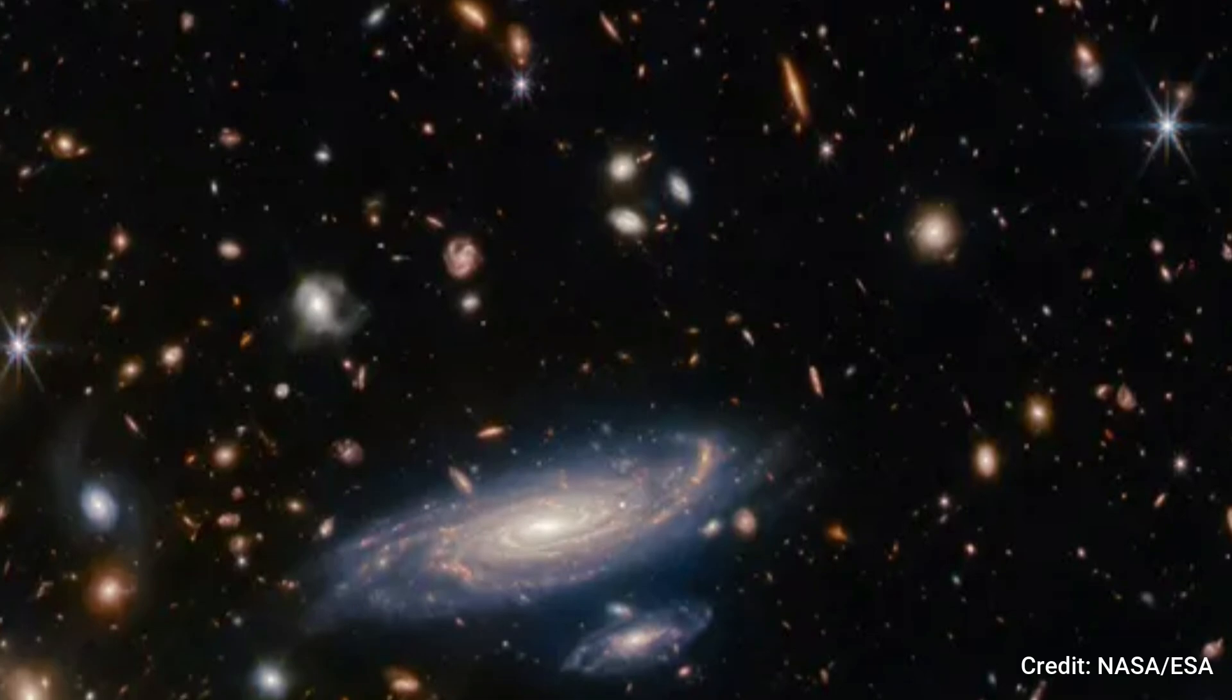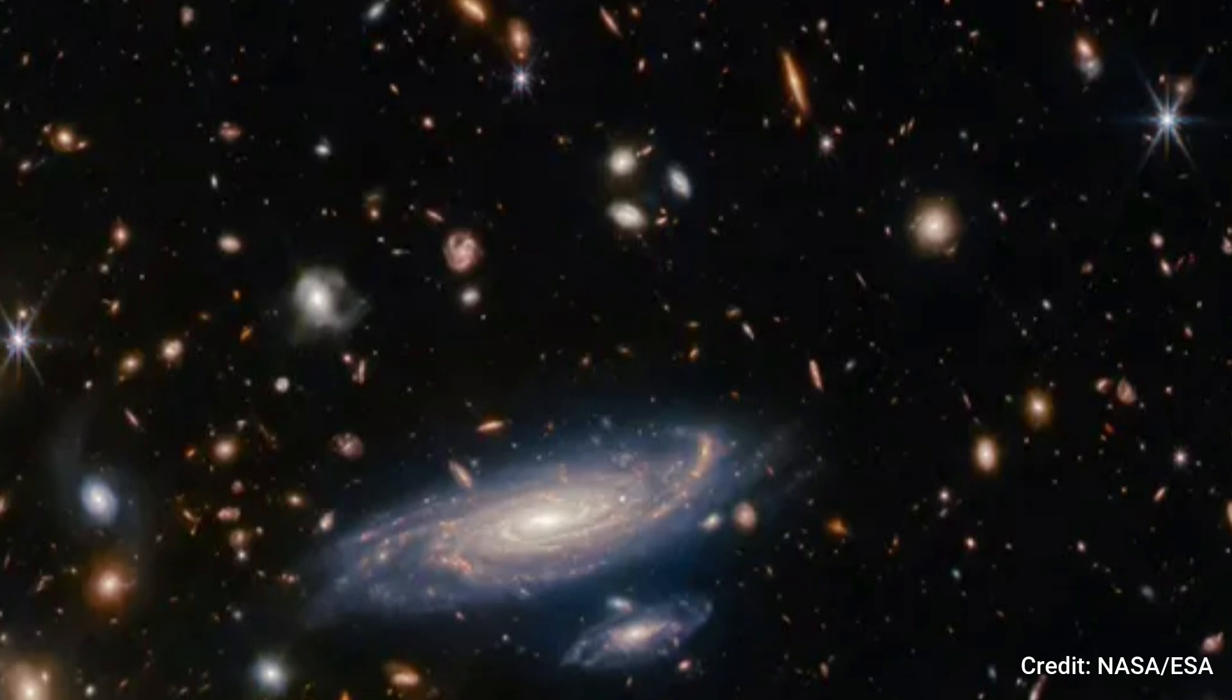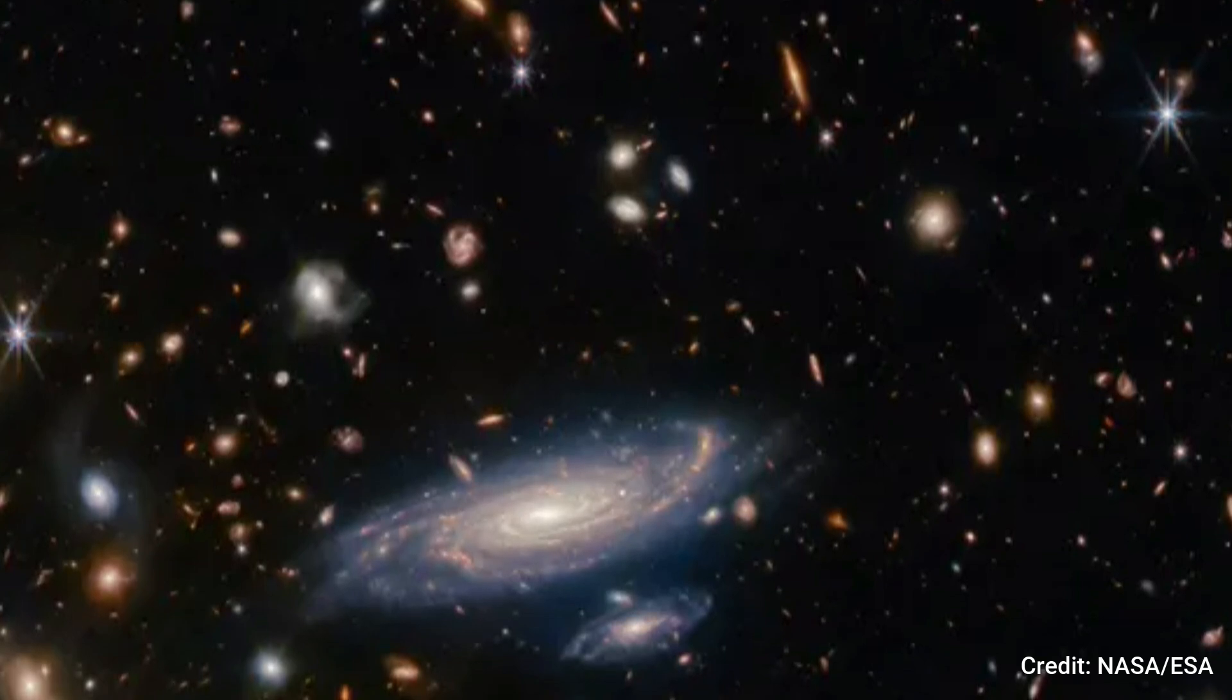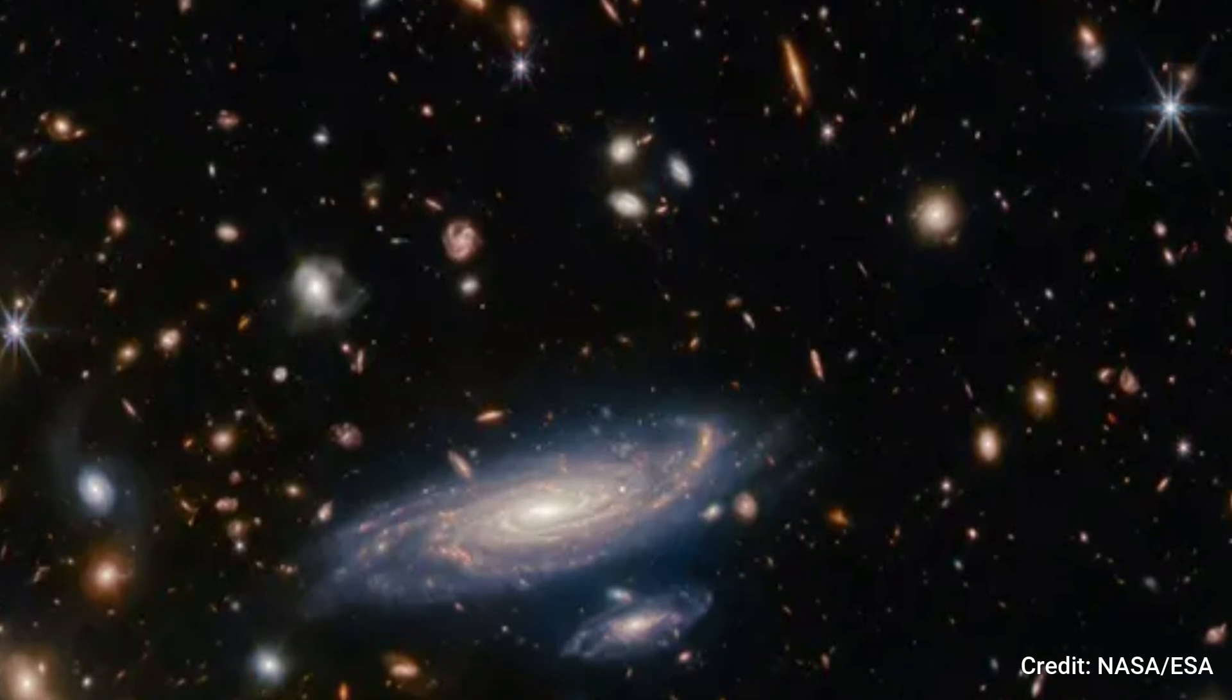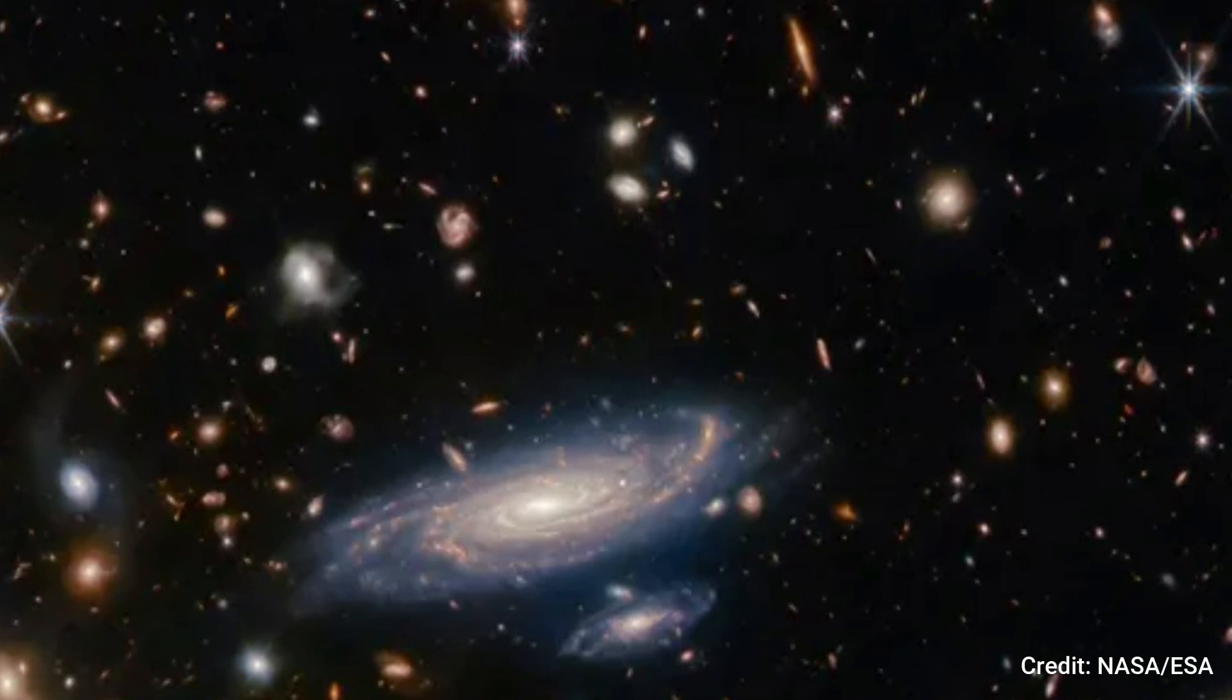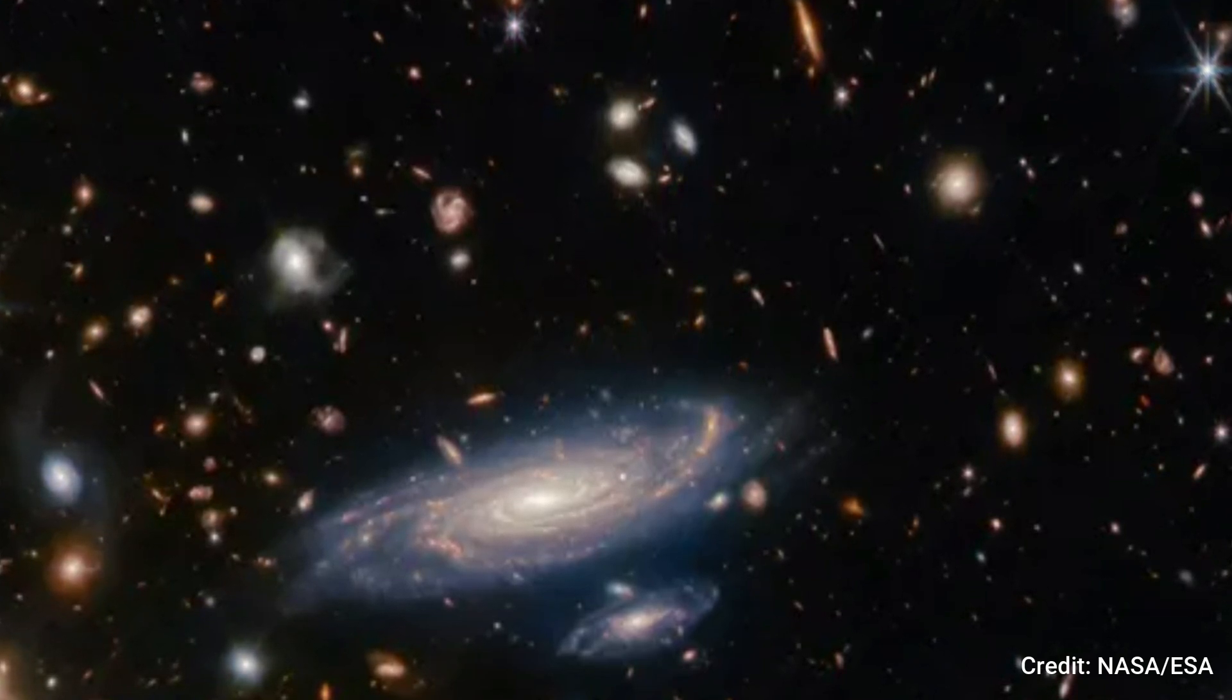Surprisingly, the team unearthed a consistent framework governing star formation rates, galactic masses and chemical compositions throughout cosmic epochs. However, this cosmic blueprint encounters its limits when confronted with the earliest galaxies, which boldly flout its constraints. It's akin to galaxies adhering to a well-established rulebook, yet, remarkably, this cosmic guidebook seems to have undergone a profound transformation during the universe's infancy.